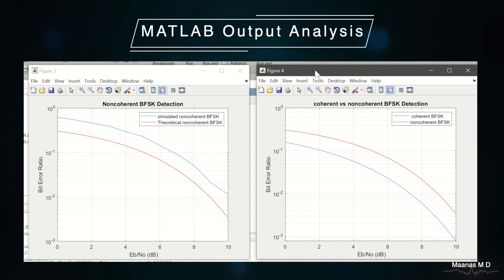Now let us come to our final plot. This plot is the coherent versus non-coherent probability of error for different SNR values from 0 to 10.